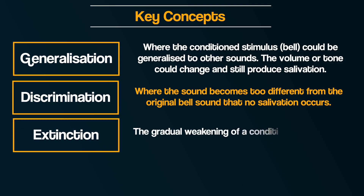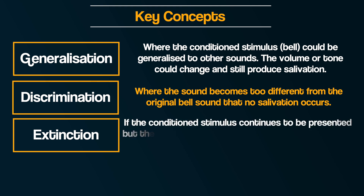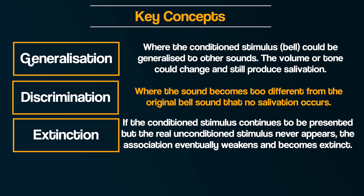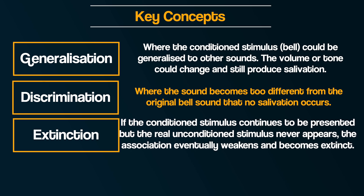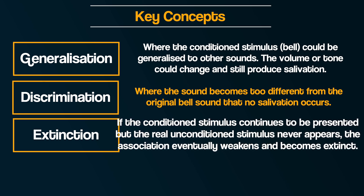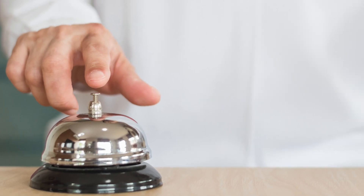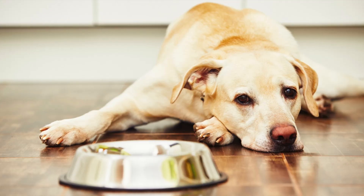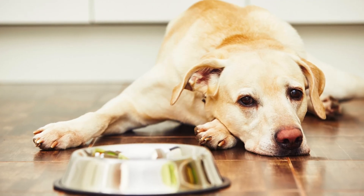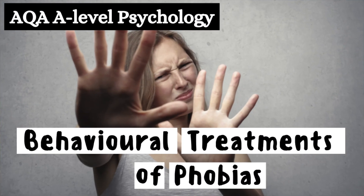Thirdly, extinction. This is the gradual weakening of a conditioned response. If the conditioned stimulus continues to be presented but the unconditioned stimulus never appears, the association eventually weakens and becomes extinct. For example, if the bell is continually presented without food, salivation would eventually disappear — the behaviour has been extinguished. The idea of extinction in relation to classical conditioning is an important concept in the treatment of phobias. There's a video on this linked in the description below.